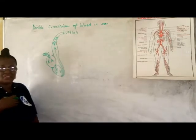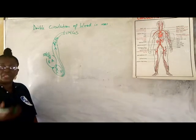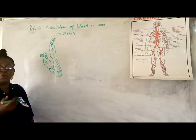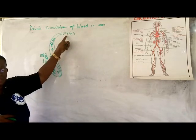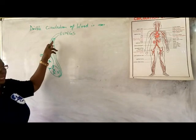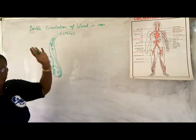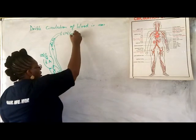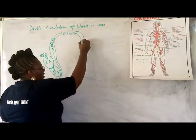At the lungs, there is an exchange. As you breathe in and breathe out, you breathe in air containing more oxygen, and so the oxygen diffuses into this blood — the blood becomes oxygenated. While the carbon dioxide, which was more in the blood coming in, diffuses out, and you breathe it out through your lungs. So now the blood is oxygenated.